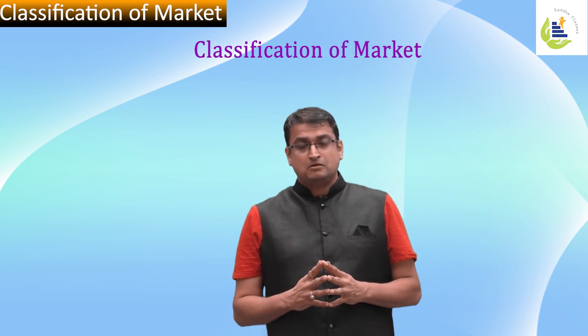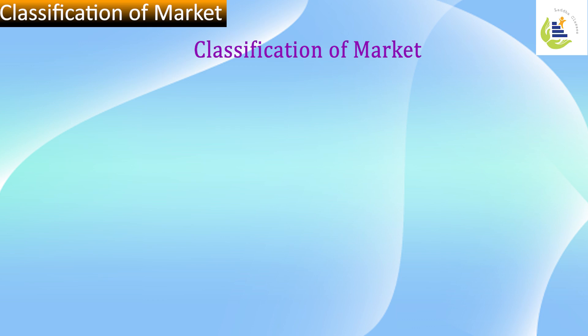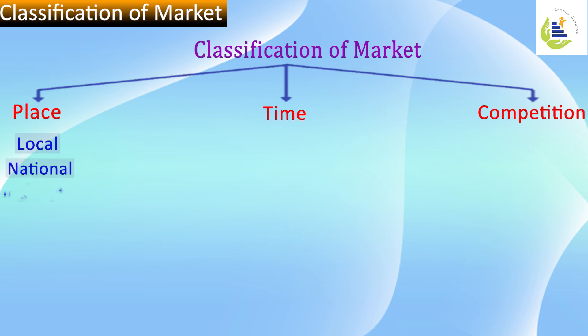Let us classify markets. Markets can be classified on the basis of place, time, and competition. When it comes to classification of markets in terms of place, it can be broadly classified as local market, national market, and international market.